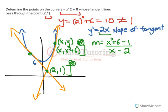So I can now set this as the slope of the tangent equal to this as the slope, and then everything's in terms of x. So it's 2x equals x squared plus 6 minus 1 over x minus 2. I'll put that in brackets so it's easier to see.